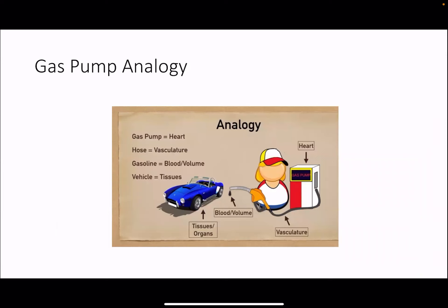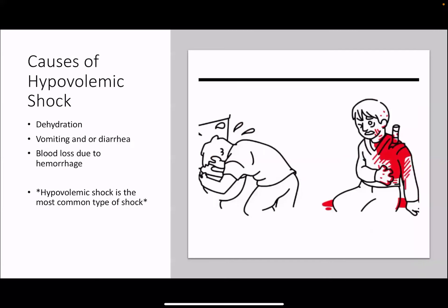Back to our gas pump analogy — now we're talking about the hose, which is the blood vessels. Hypovolemic shock is lack of blood or fluid, caused by dehydration, vomiting, diarrhea, or loss of blood due to hemorrhage. Hypovolemic shock is the most common type of shock, and probably the most common type you will see.